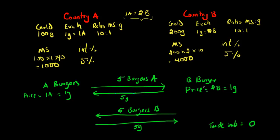Country B makes Country B burgers for the price of two Country B dollars, which is again equivalent to one gram of gold. Country A sends Country B five Country A burgers and gets five grams of gold in return. Country B sends Country A five Country B burgers and gets five grams of gold, implying there's no trade imbalance between the two countries.